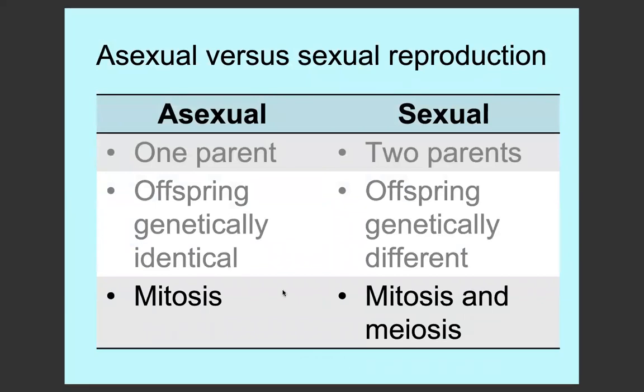Asexual reproduction involves mitosis, so cell replication, where sexual reproduction involves mitosis and meiosis.